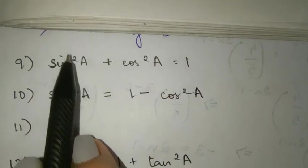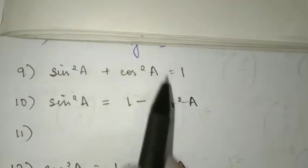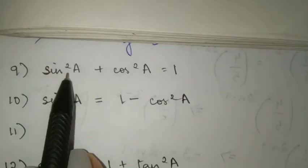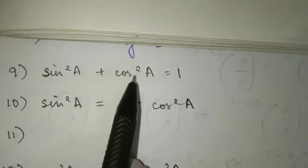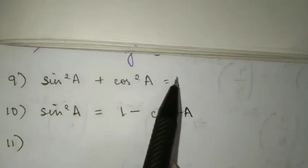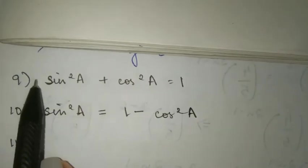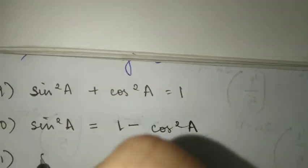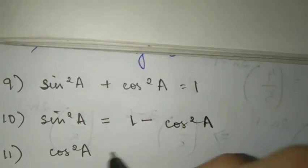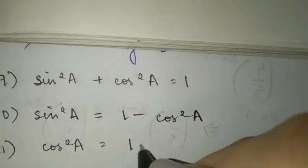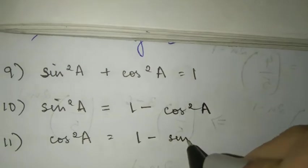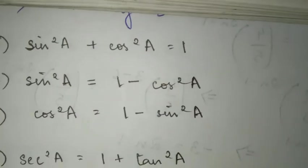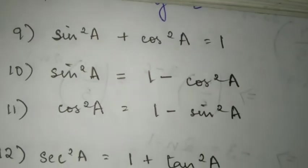Similarly, if you want only cos square A, you shift sin square A to the other side. One minus sin square A equals cos square A. That will be the next formula.